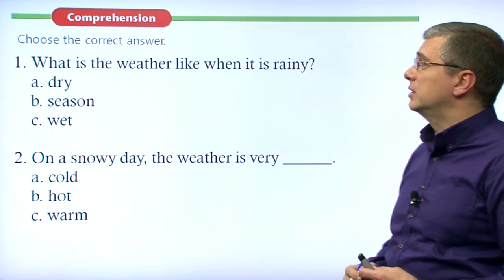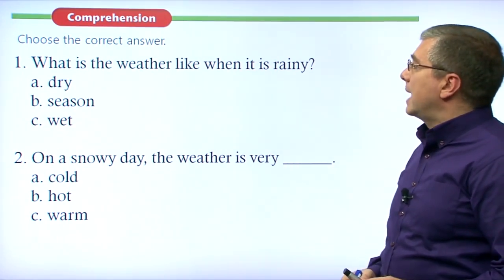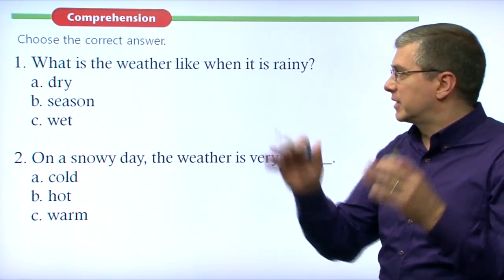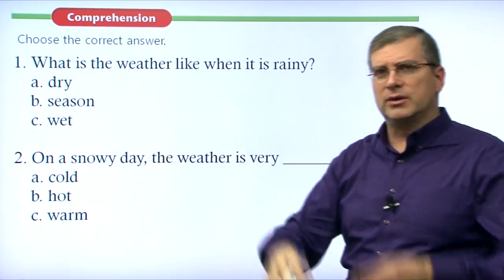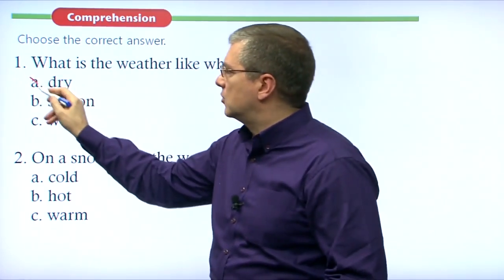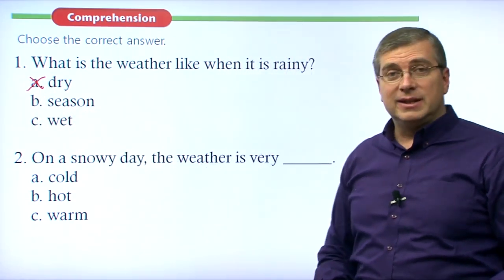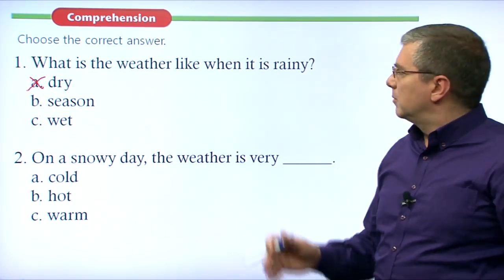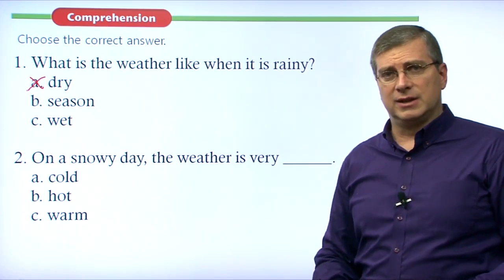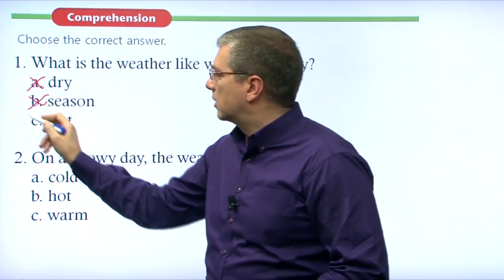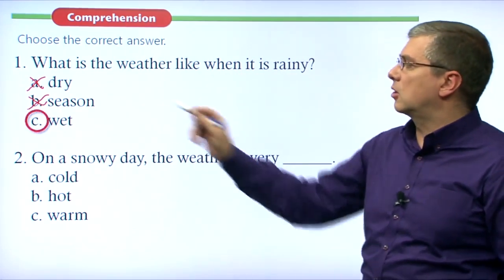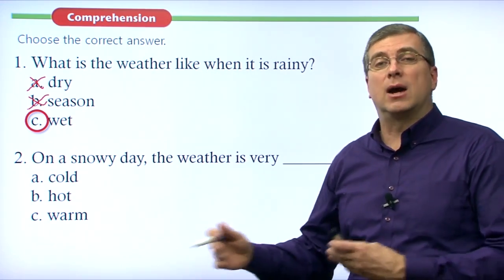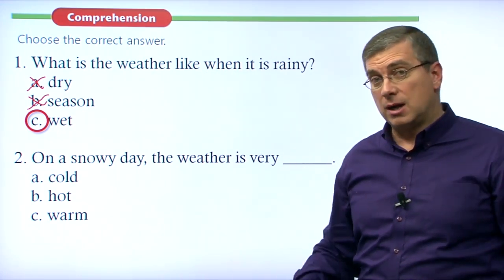Now let's go over our comprehension questions. Number one: what is the weather like when it is rainy? When it's rainy, water is falling from the sky — so is it dry? No way. Is it season? That doesn't make sense as a weather description. The correct answer is C — it is wet. It's wet outside. Bring an umbrella or wear rain clothes.